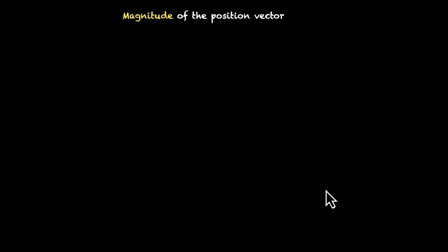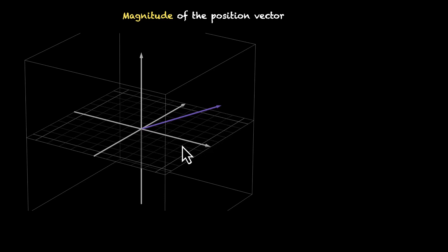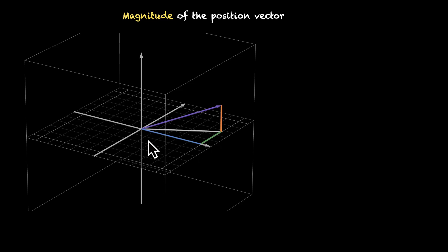What's the magnitude of this position vector? Let's figure this out. This is something we have done in the previous grade, class 11th. Pause the video and recall what we did to find this magnitude. If we have to move from the origin to this point, we'll move along the x-axis, then along the y-axis, and then along the z-axis. So this length is x, this length is y, and this length is z.